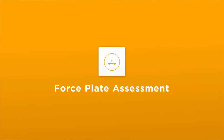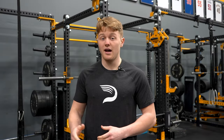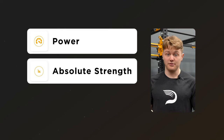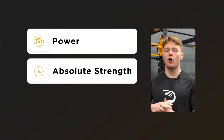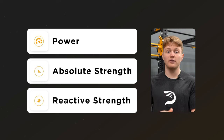Once we're done with the movement screening, we'll move on to the force plate assessment. The force plate assessment will tell us a few main things about how you move and how you produce force as an athlete. We're getting power — which is how fast you can produce force — absolute strength, which is how much total force you can produce, and reactive strength, which is how quickly you can reproduce that force.